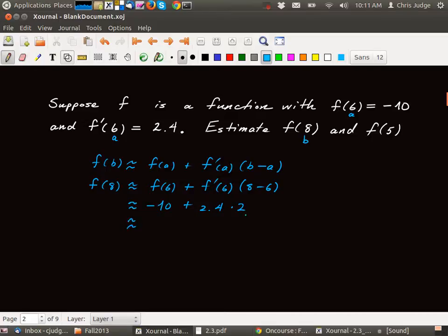And then if we do the arithmetic, this is minus 10 plus 4.8. Which is the same as 5.2 with a minus sign. Okay, so that's how we estimate f of 8.